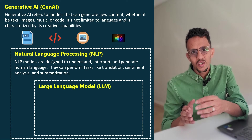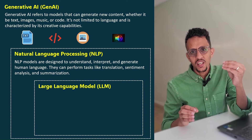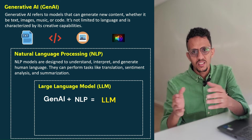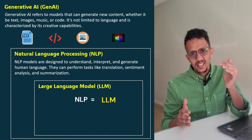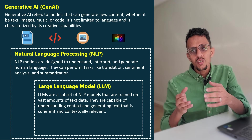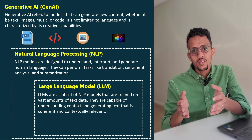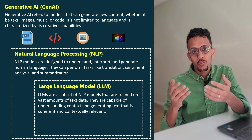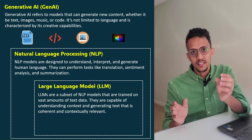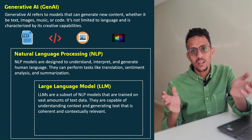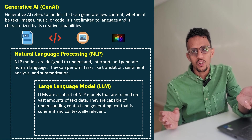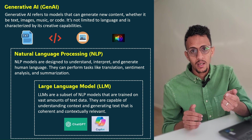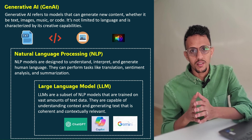And Large Language Models: when we add the creativity of Generative AI to Natural Language Processing, we come up with something called Large Language Models. Large Language Models are a subset of Natural Language Processing and refer to models trained on vast amounts of text data. These models can create or generate new creative text that is highly relevant and highly coherent to the original text. Examples of Large Language Models include ChatGPT, Microsoft Copilot, Google Gemini, and many many others.